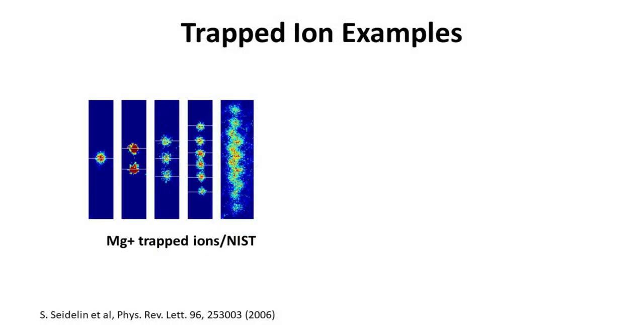Now we present a few examples of trapped ions. In this image, there are 1, 2, 3, 6 and 12 magnesium ions loaded in an ion trap. This image was taken by Seidlin and Chevrini from the National Institute of Standards and Technology in 2006.